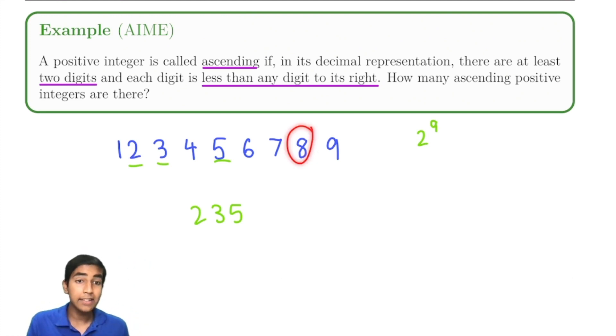For example, 8, in our subset, is counted. Eight is counted, but it's not allowed in our problem, because it has to be at least two digits. So we can use complementary counting and subtract off these cases. How many one-digit numbers are there? Just nine. The empty set.